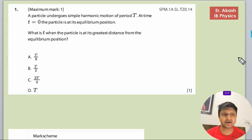There is another question that says a particle undergoes SHM motion of period T. At time t equals 0, the particle is at equilibrium position. What is t when the particle is at its greatest distance from the equilibrium position? So basically, let's understand what's happening in this question.